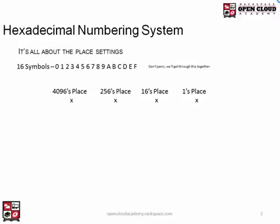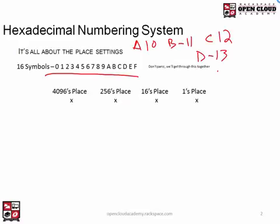So, hexadecimal number conversion. Converting hex numbers to decimal is really not a big deal. Just like binary has place settings, hexadecimal has place settings too. Hexadecimal has 16 symbols, from 0 to F. Converting the letter symbols: A equals 10, B equals 11, C equals 12, D equals 13, E equals 14, and F equals 15. Those are the decimal equivalents of those hex symbols.